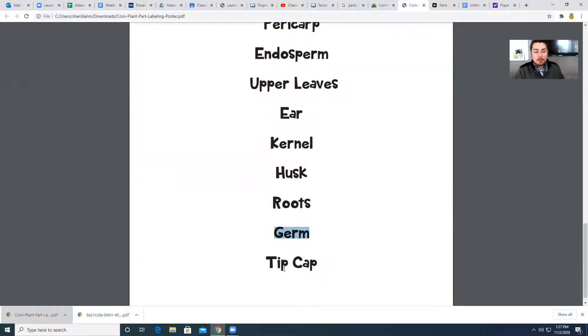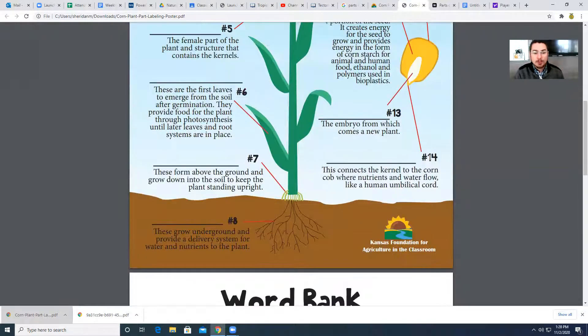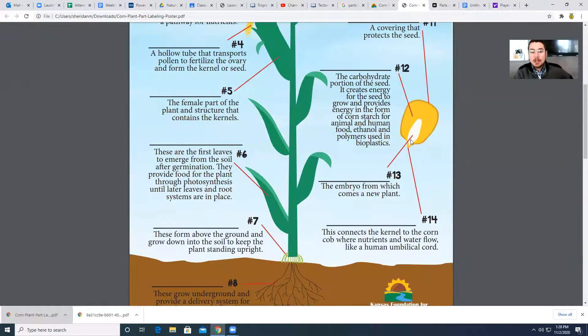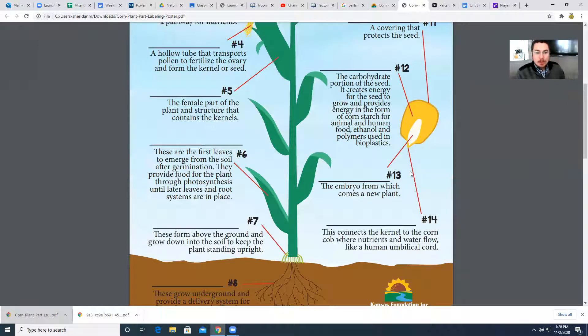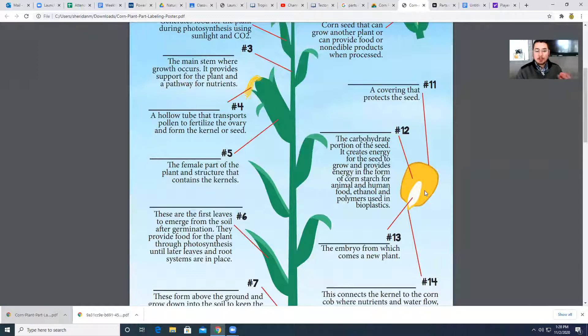And then that very bottom tip that actually connects to the kernel or to the corn cob itself is called the tip cap. This part down here, number 14, connects the kernel to the corn cob where nutrients and water flow. It's the umbilical cord of the corn kernel. So I wanted to run through those very quickly so that you can define those parts of the actual corn kernel itself.